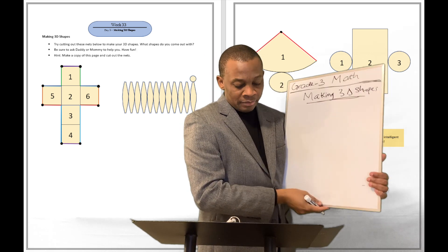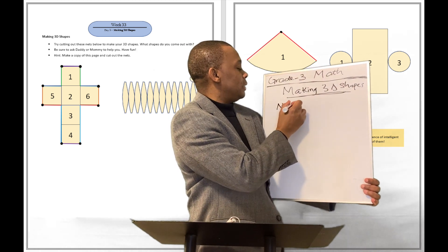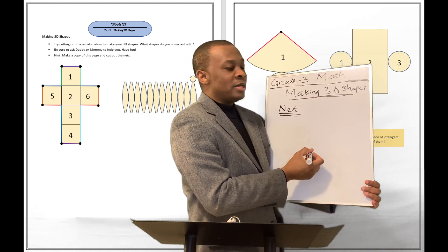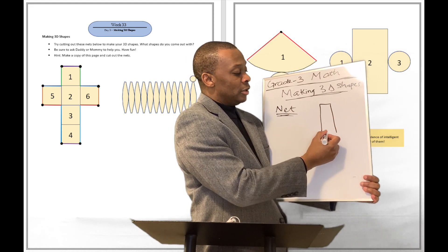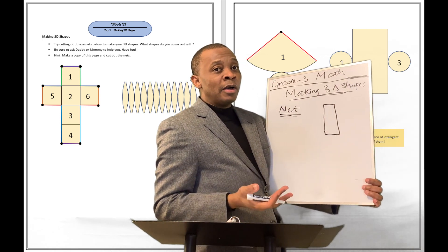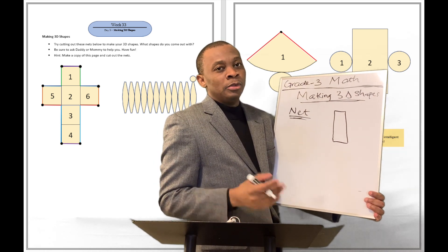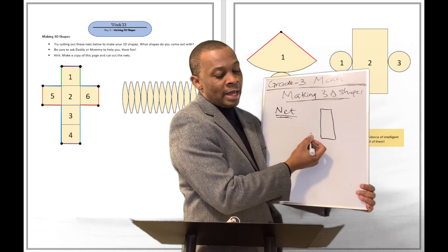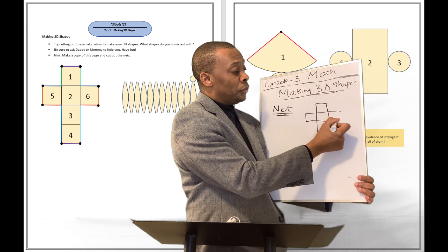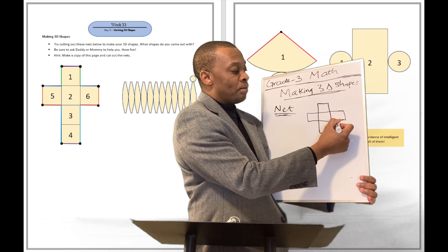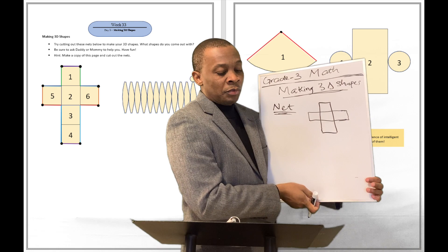On page 218, there is something we call a net. A net is going to be like something you can cut out. You can cut it out from the worksheet — if you want, make a copy of it, especially if you have the paperback workbook. You don't want to cut your paperback book. Just go ahead and make a copy of that page and then you can cut it out. A net is like a 3D shape that's been opened up for you, and if you cut it out, you can fold it back together and you're going to see the 3D shape come in front of you.